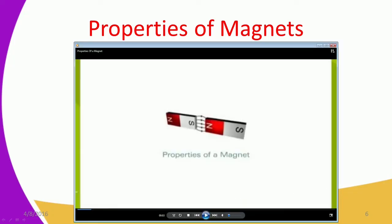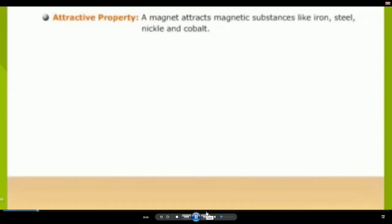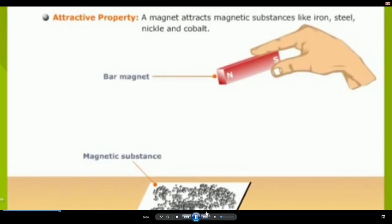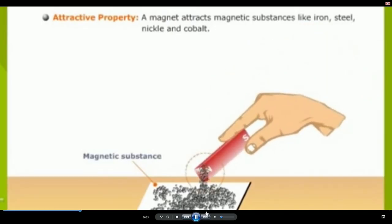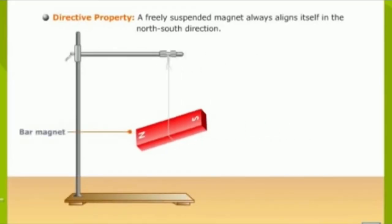Now let's look at properties of magnets. The first property of a magnet is the attractive property — magnets attract magnetic substances like iron, steel, nickel, and cobalt. You can see the magnet is attracting those magnetic substances. That is the first property of a magnet, and the end of the magnet shows that we have a strong force of attraction.